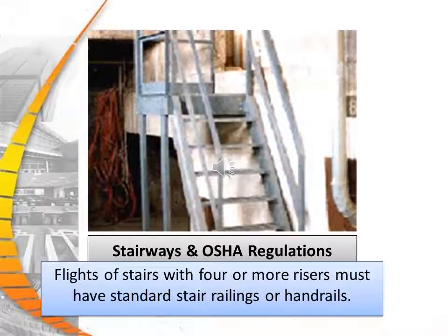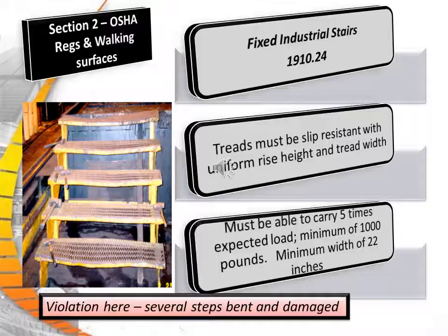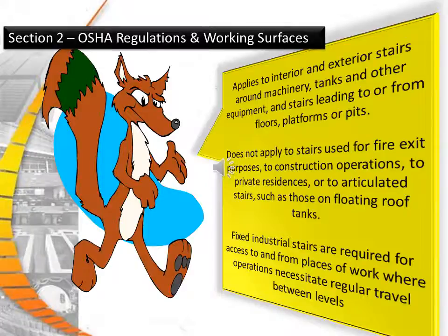The stairways and ladders standard calls for flights of stairs with four or more risers to have standard railings or handrails. Fixed industrial stairs must be slip resistant with uniform rise height and tread width, capable of carrying five times the expected load with a minimum of 1,000 pounds, and have a minimum width of 22 inches. The standard applies to interior and exterior stairways around machinery, tanks, and other equipment, and stairs leading to or from floors, platforms, or pits. It does not apply to stairs used for fire exit purposes, construction operations, private residences, or articulated stairs such as those on floating roof tanks.